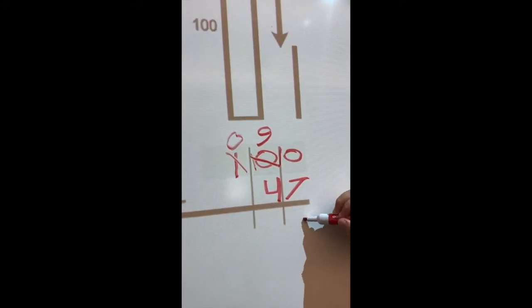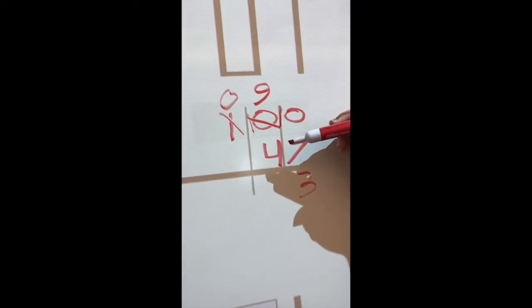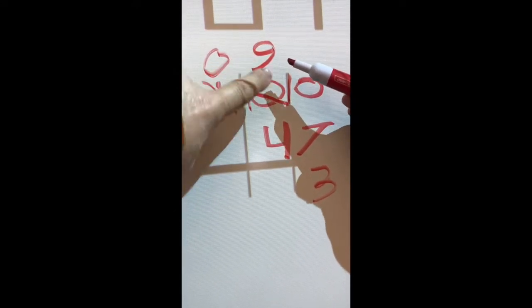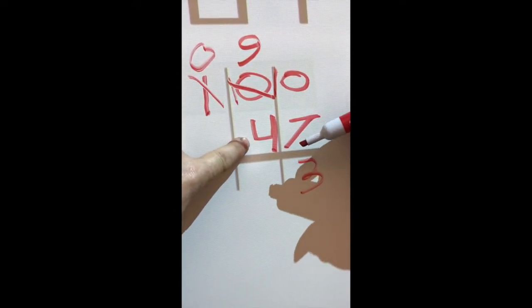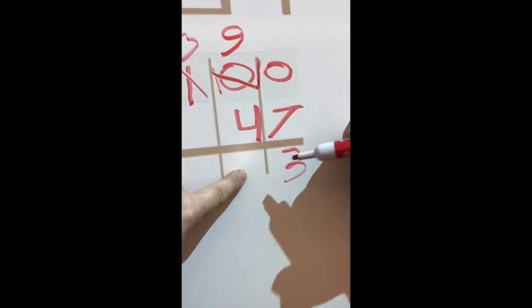3. Good. How many tens do you have? 9. How many tens have you taken away? 4. What's left? 5. Nice.